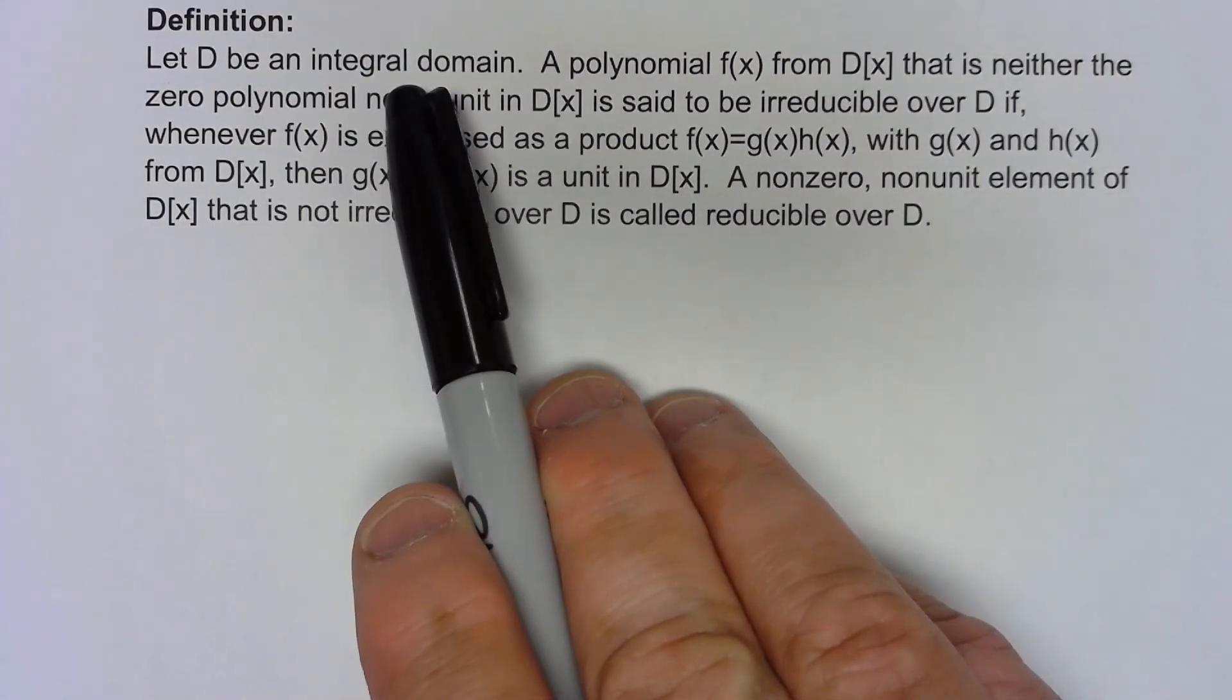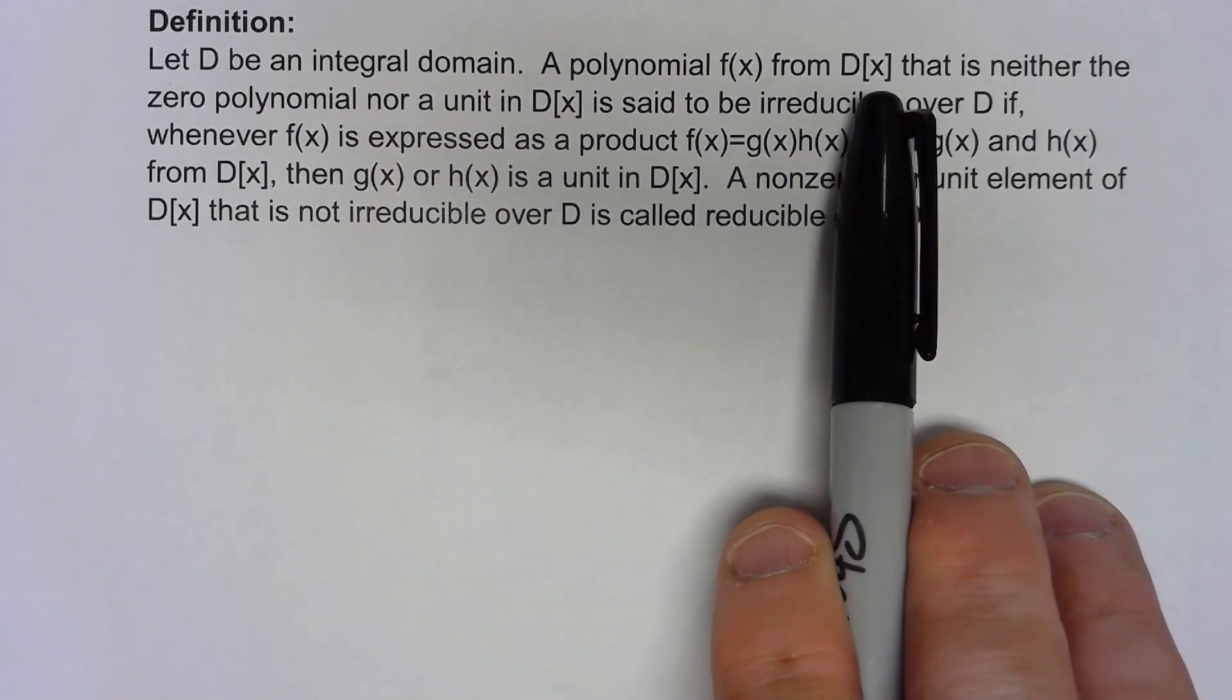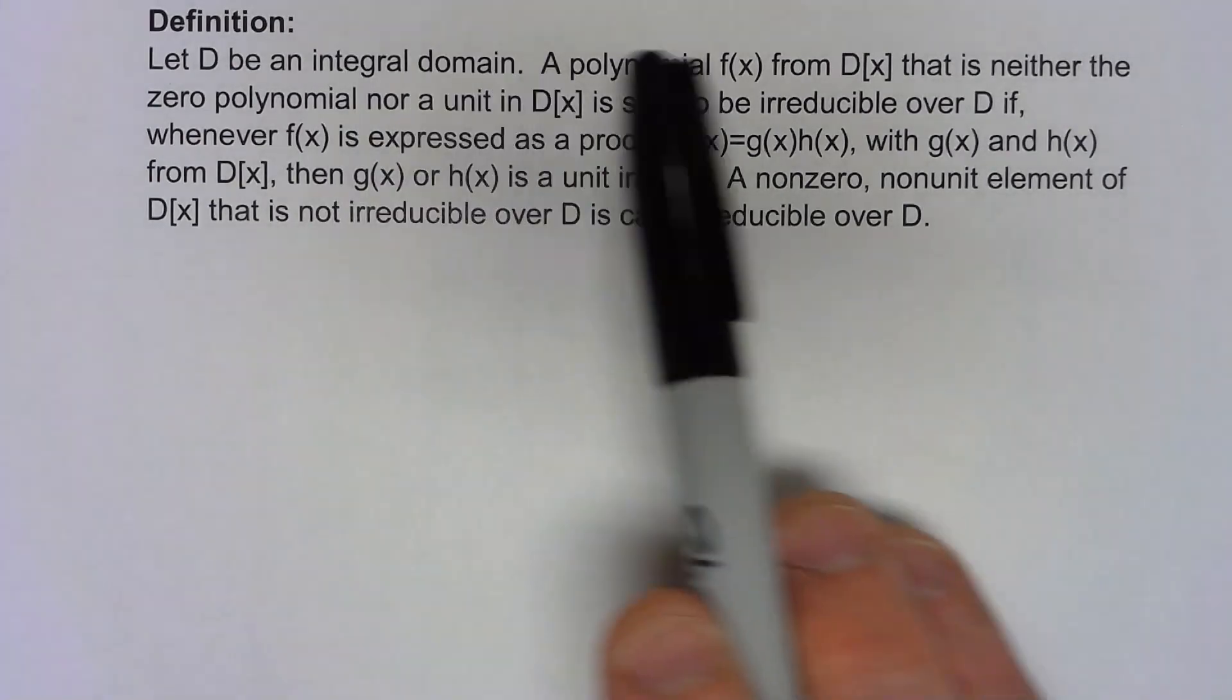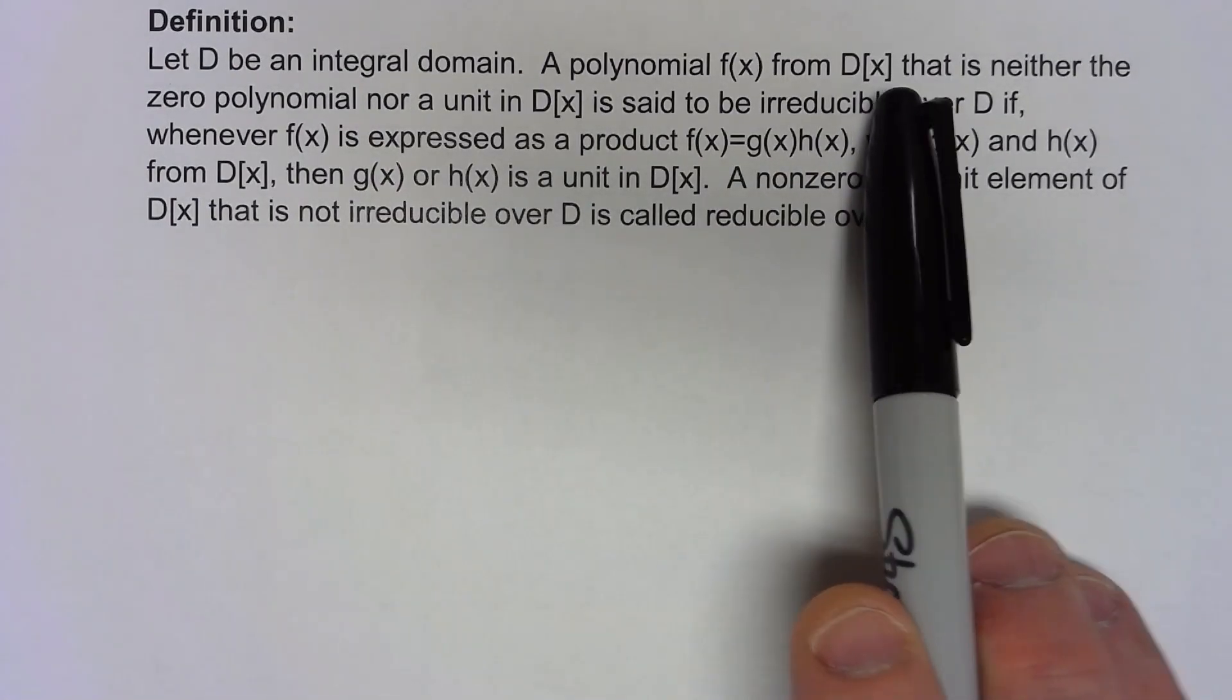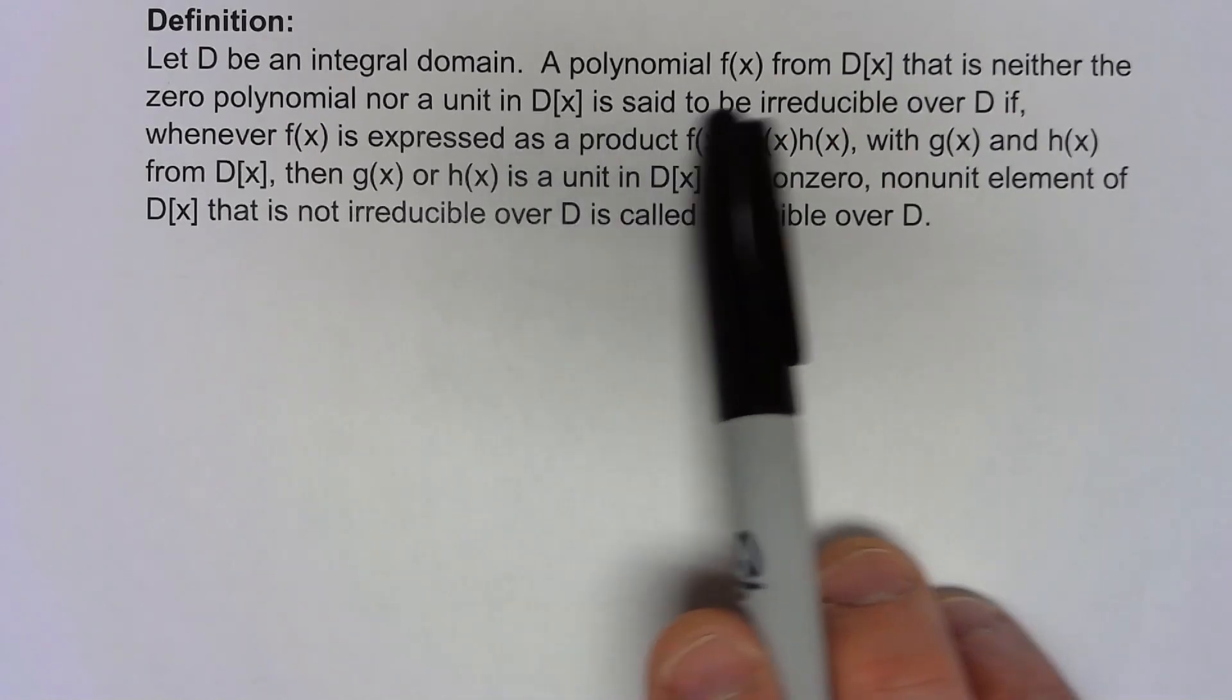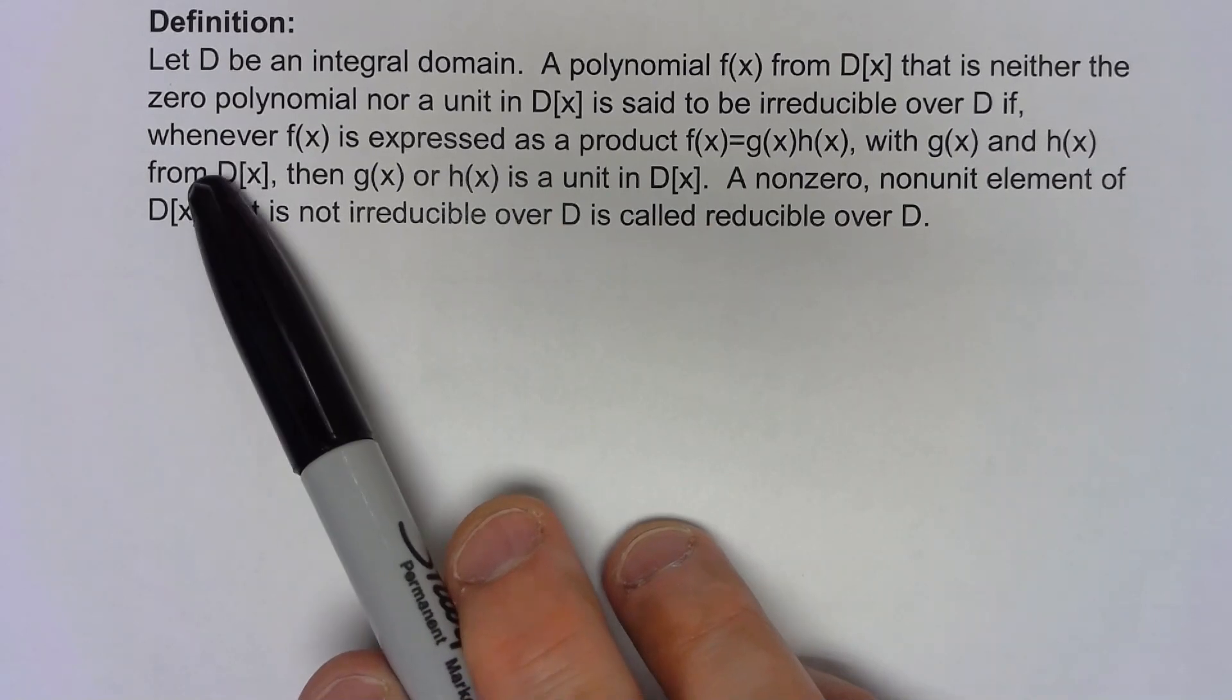Let's start with an integral domain and remember that means that it doesn't have any zero divisors. We'll create the polynomial ring based on that integral domain and remember that if we start with an integral domain and create a polynomial ring that's also an integral domain and let's take a polynomial in there that's not a zero polynomial and not a unit.